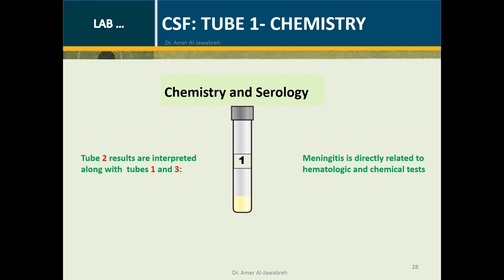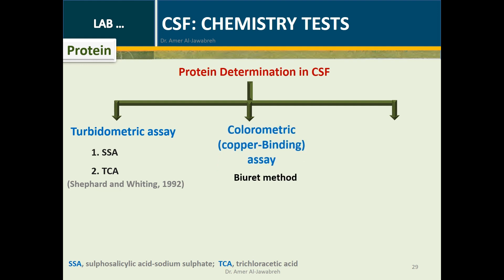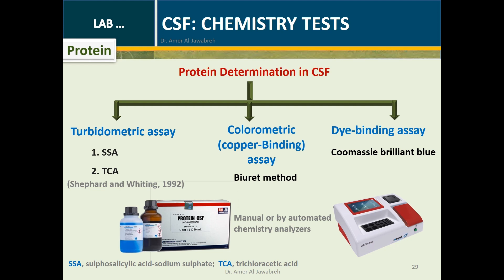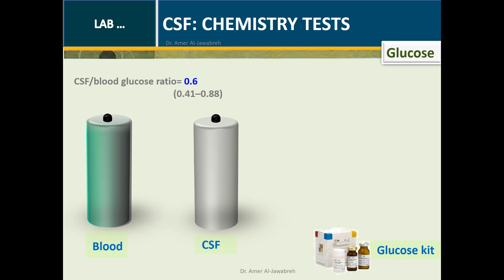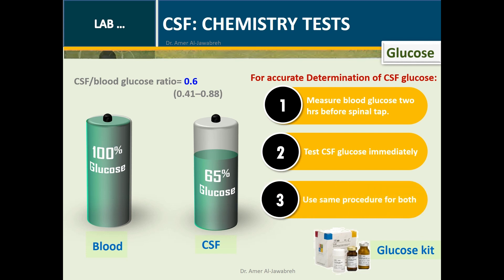CSF Tube 1 — Chemistry and Serology: The three tubes are interpreted concurrently. Protein in CSF is determined by turbidimetric assay (such as SSA and TSA), colorimetric copper binding assay (such as the Biuret method), or dye binding assay (such as Coomassie Brilliant Blue). Protein can be determined by manual methods or automated chemistry analyzers. CSF/Blood Glucose Ratio equals 0.6 (ranging 0.4 to 0.88). For accurate determination, measure blood glucose 2 hours before spinal tap and test CSF glucose immediately, using the same procedure for both.